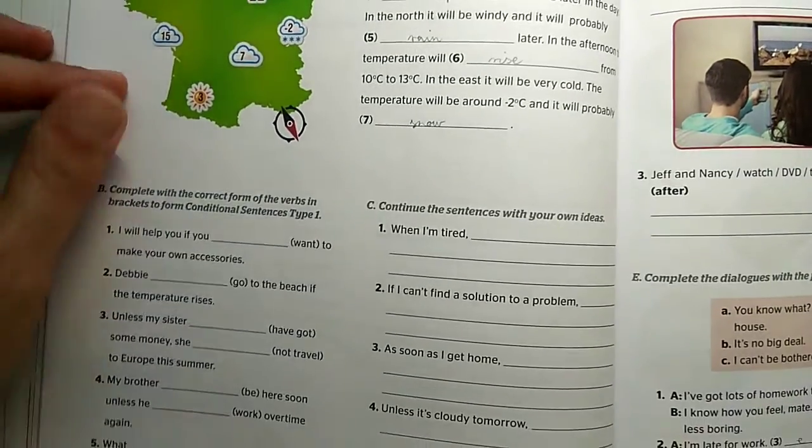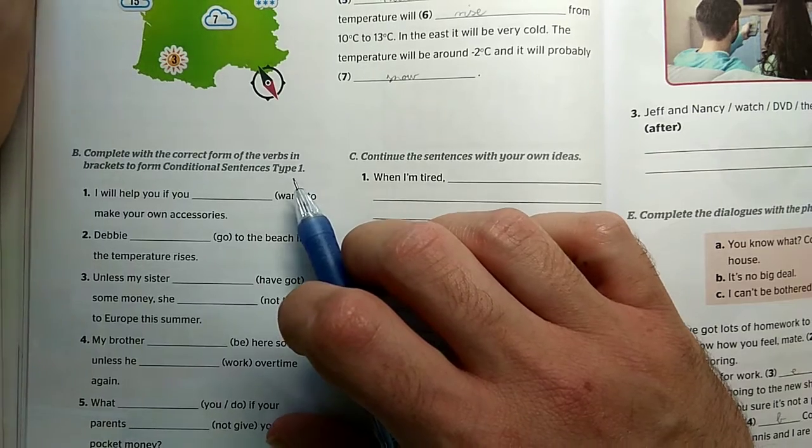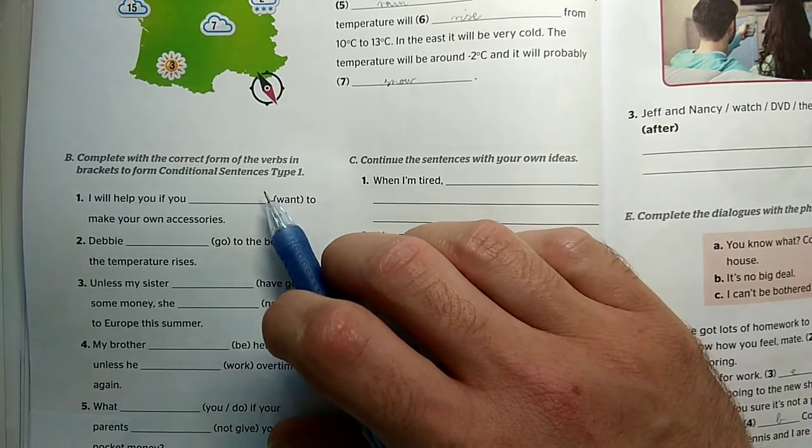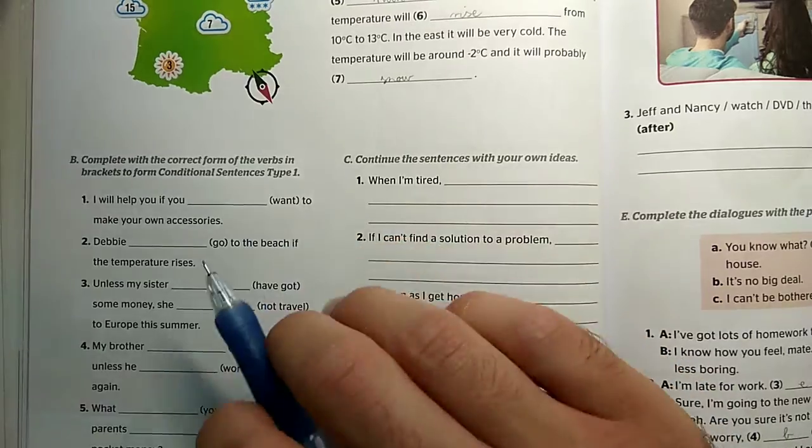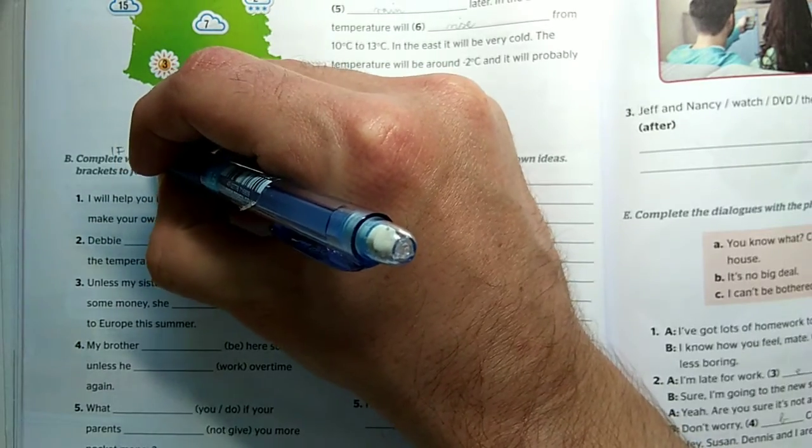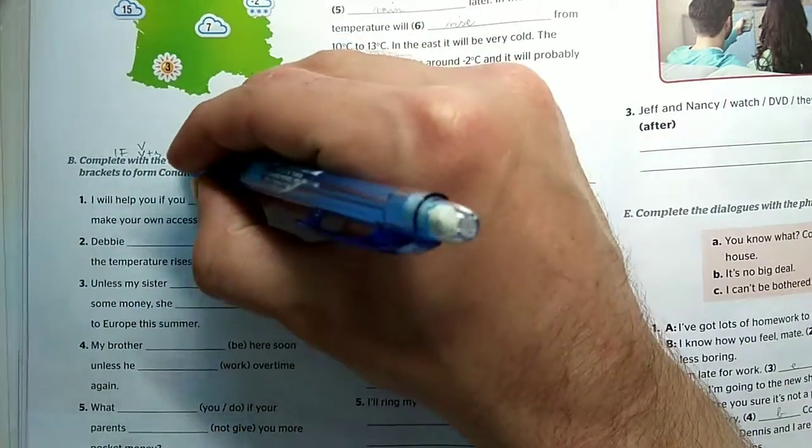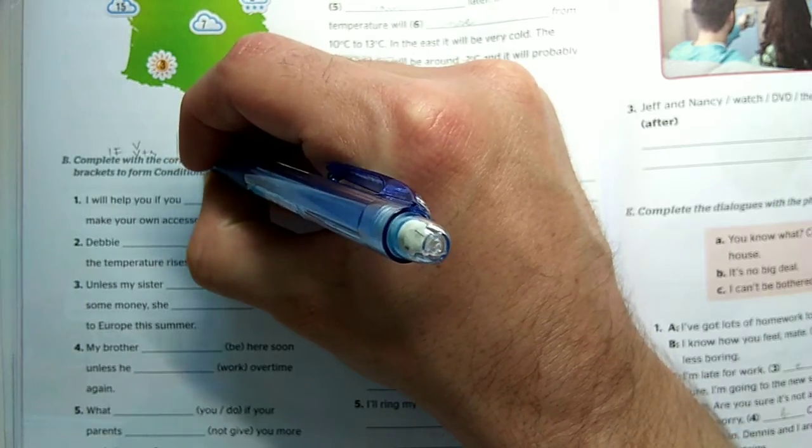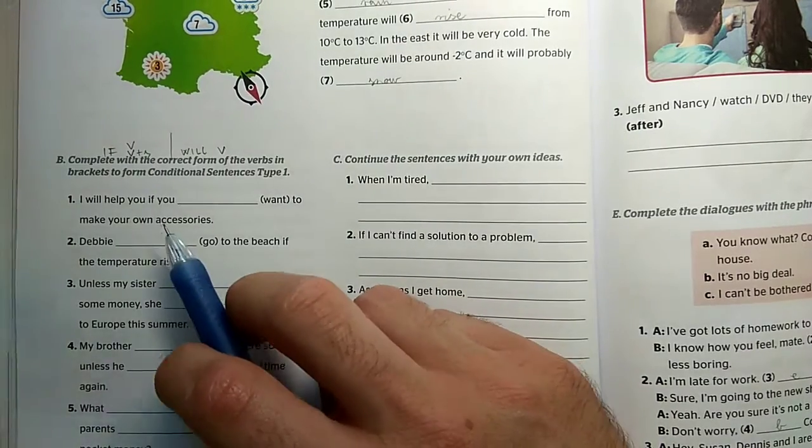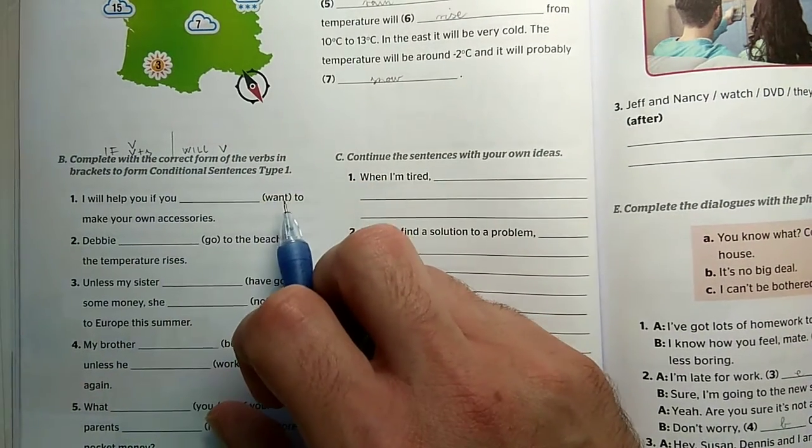Now let's move to activity B, where we have to use conditional sentences type 1, so we have to use first conditional. We need to use the first type of conditional, which is very strictly structured. In the if clause we always use the present tense, which can even be an S in third person singular at the end of the verb. And in the other clause, the non-if clause, we use the future tense, the will auxiliary and the main verb.